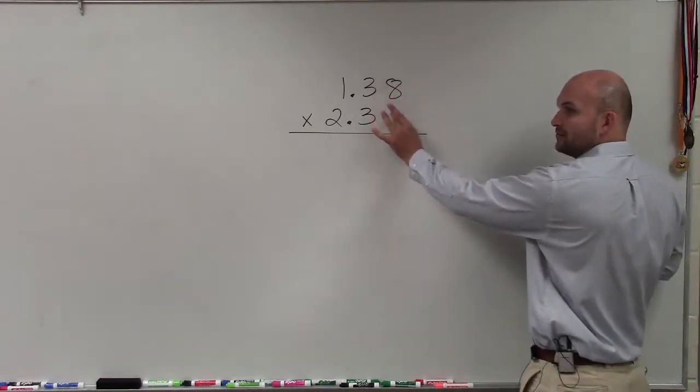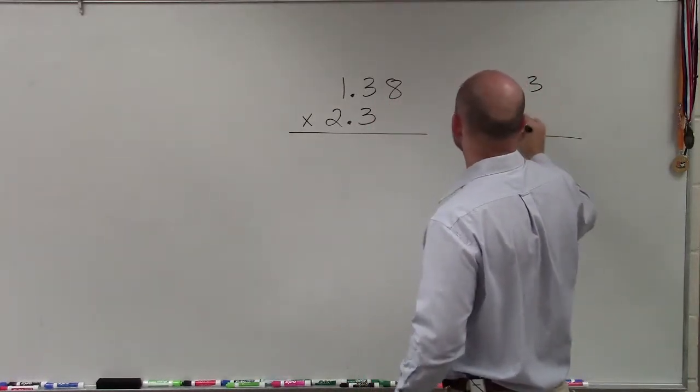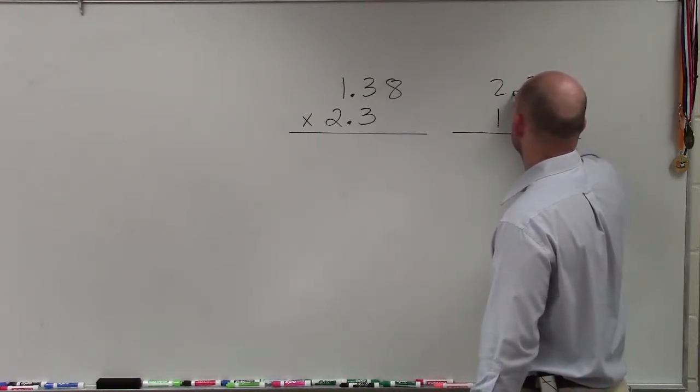So I'm not going to want to rewrite it like this. I'm going to want to rewrite it as 2.3 times 1.38.